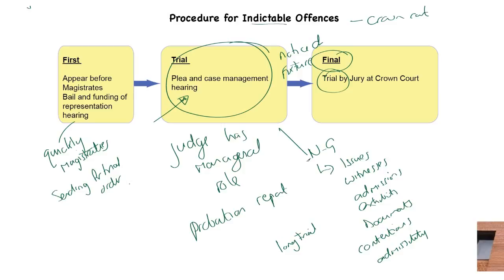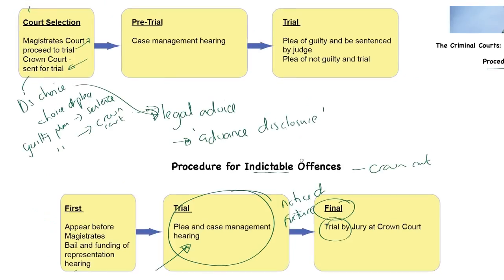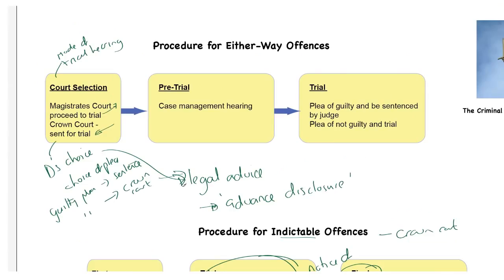In an exam question, after your scenario, you'll decide somebody is liable for a Section 20, Section 18 or ABH offence, and the question is likely to ask: what is the procedure for X to go to court? If it's a Section 18, you will go through the indictable offence procedure we've just discussed. If it's a Section 20 or ABH, you'll go through the either way offence procedure discussed earlier.